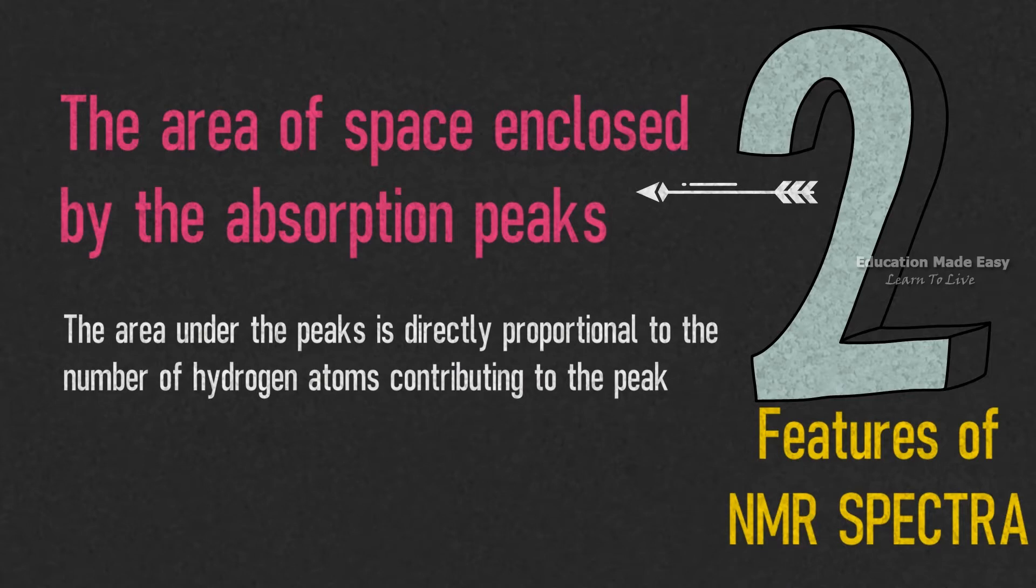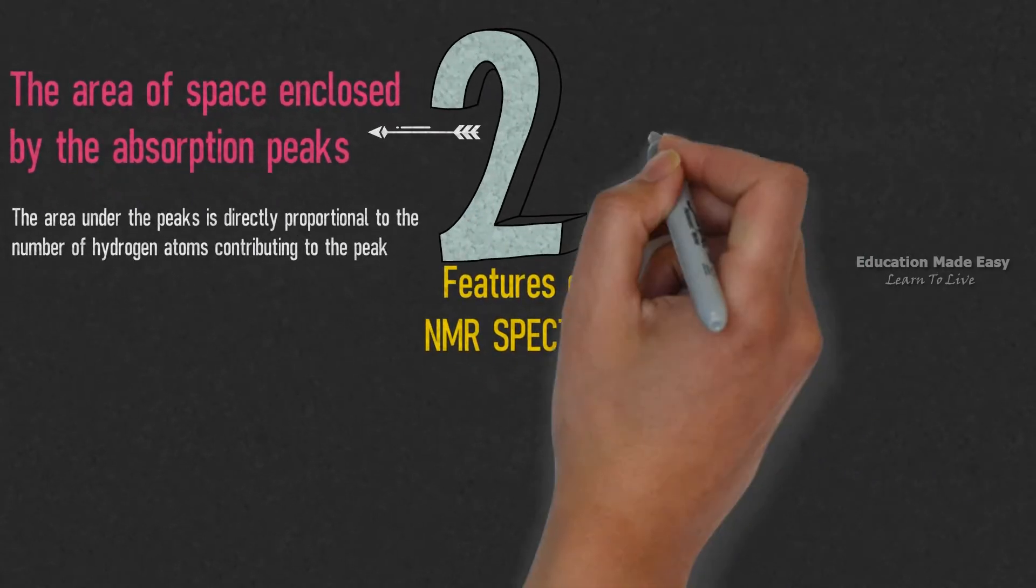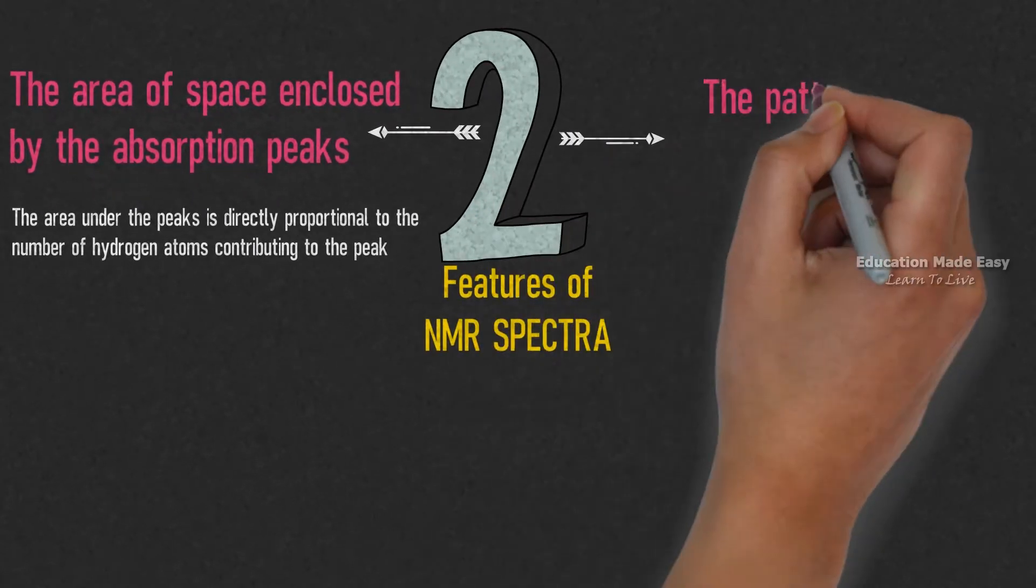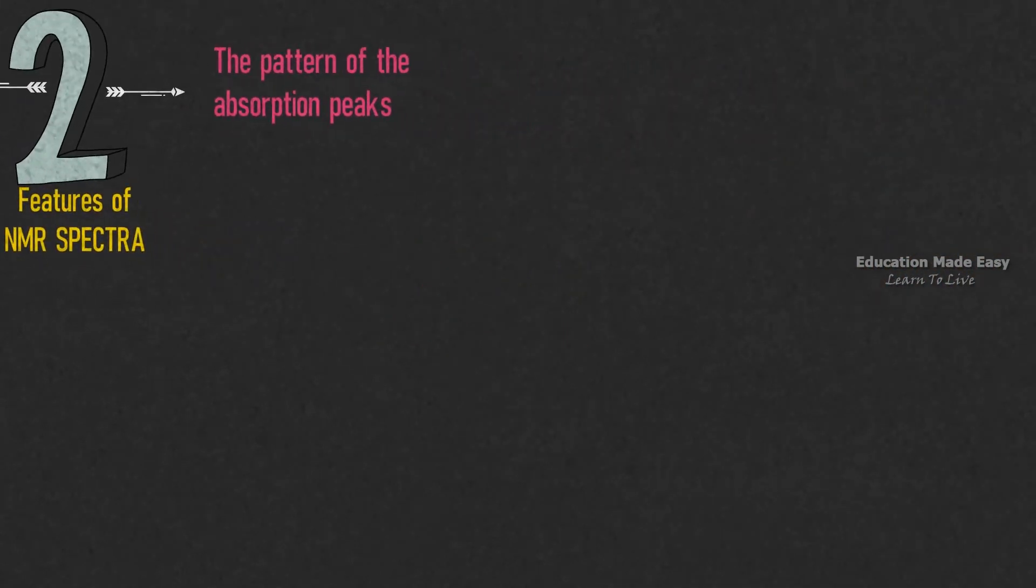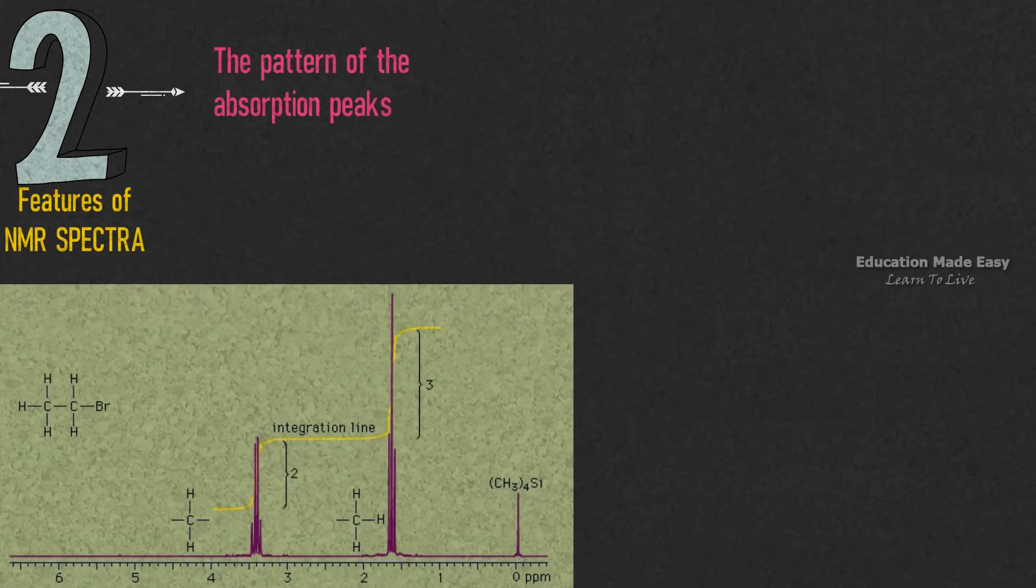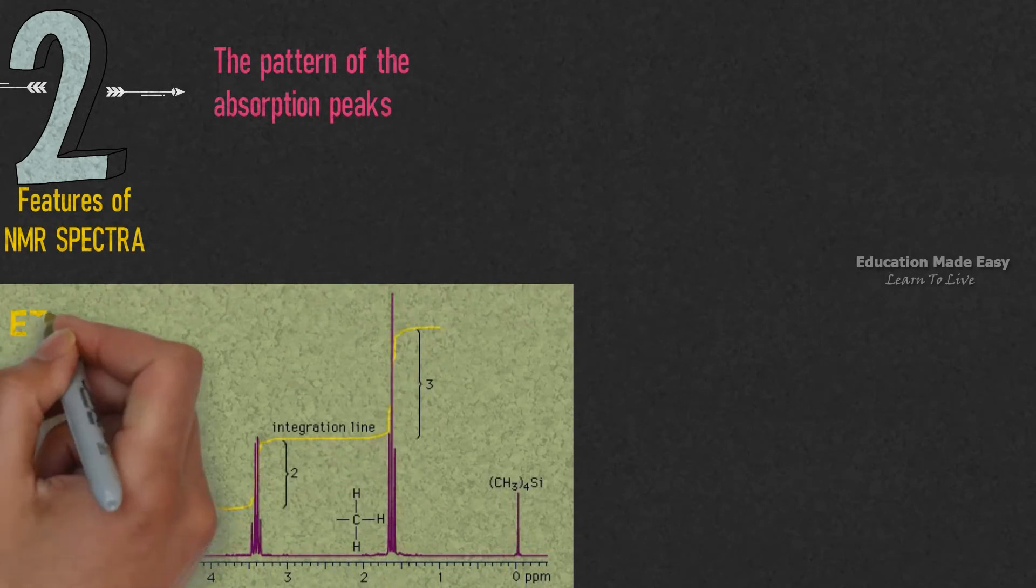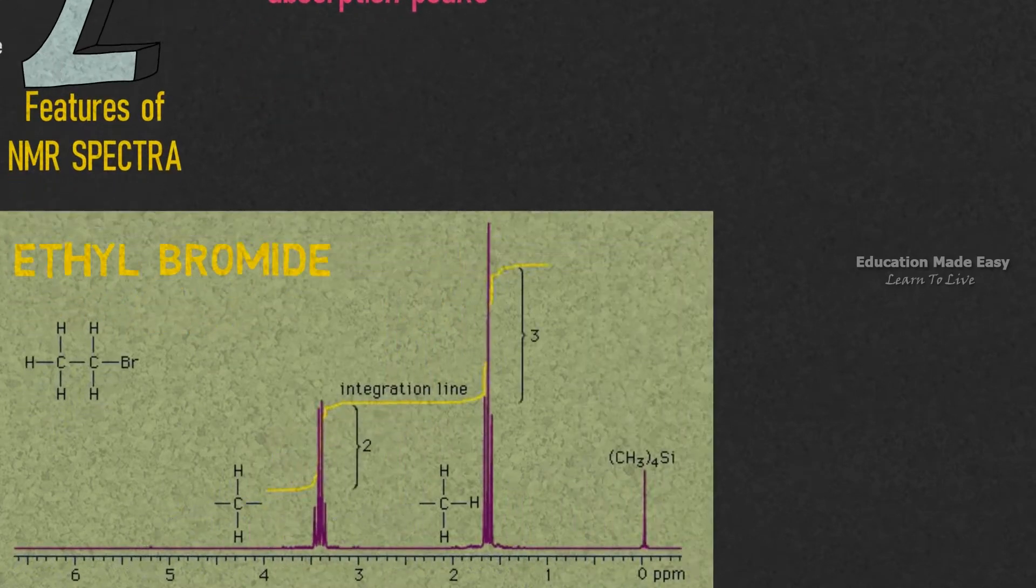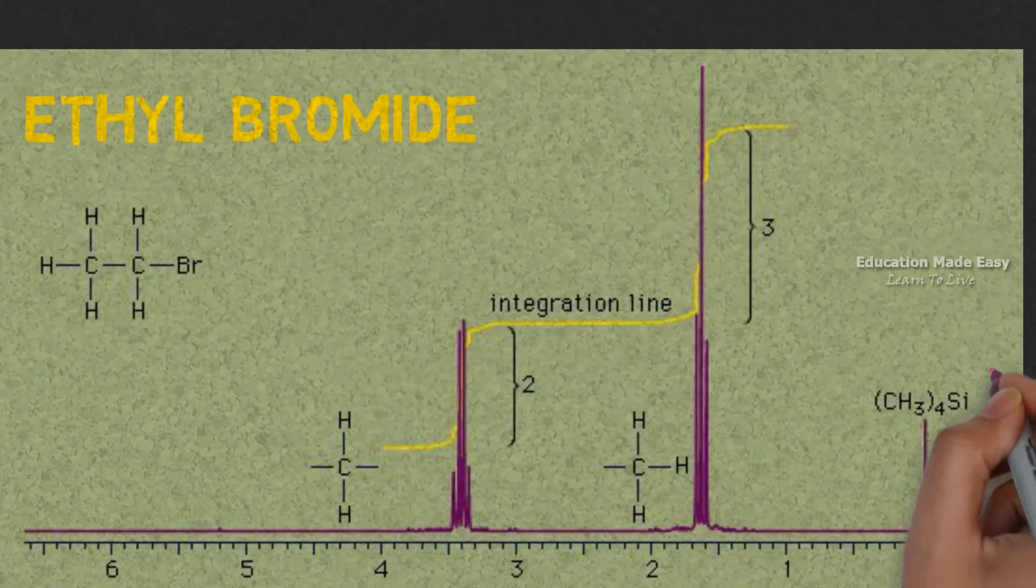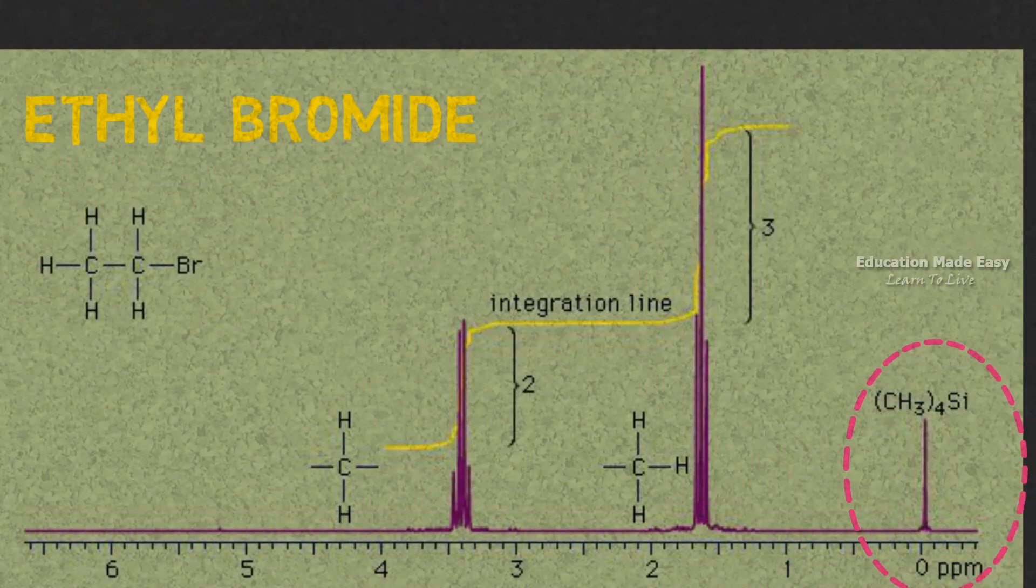The second feature of NMR spectra is the pattern of absorption peaks. Consider the chemical shift diagram shown. It is the diagram of ethyl bromide. In this diagram, do not take this signal into consideration. It is the signal generated due to the reference compound tetramethylsilane or TMS.